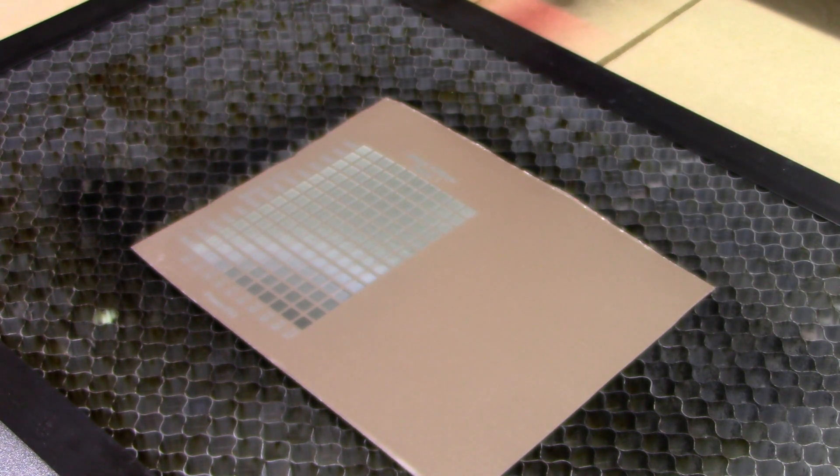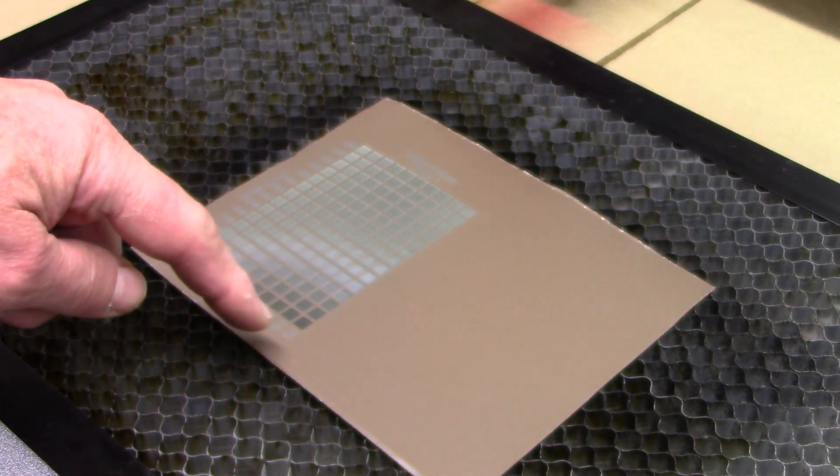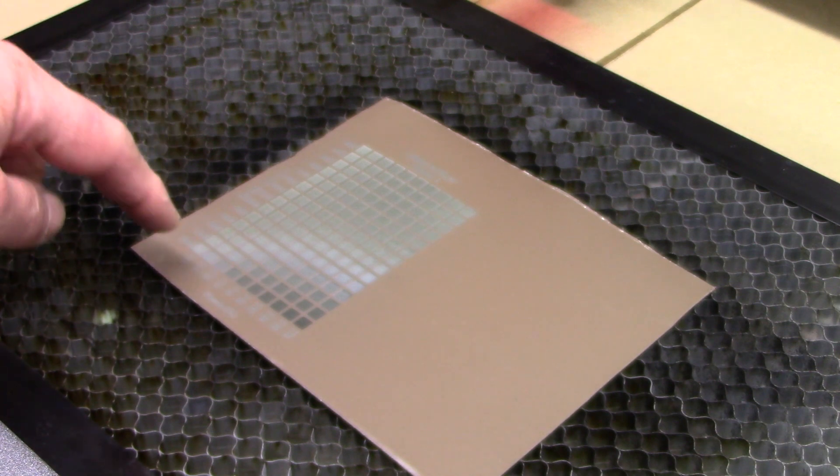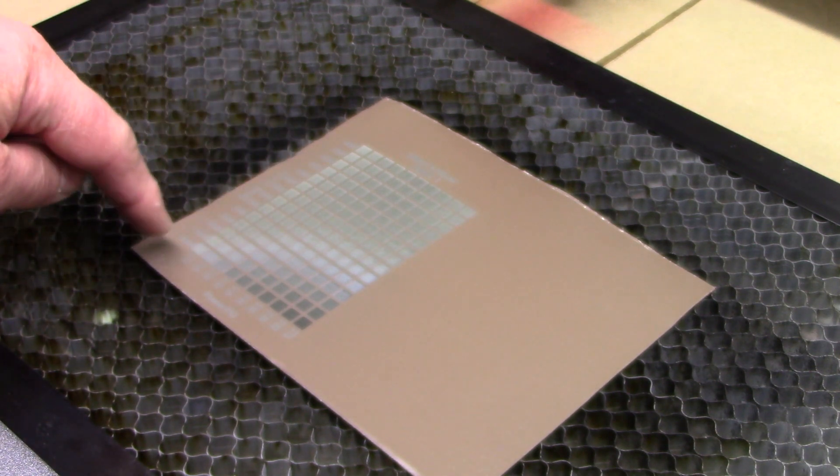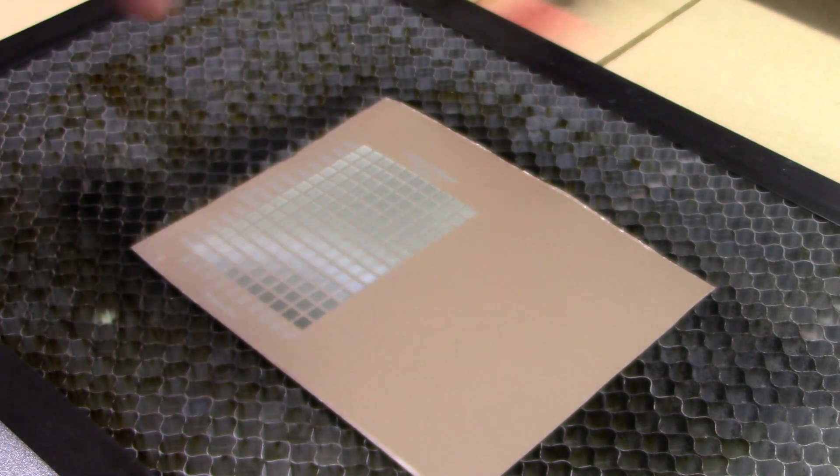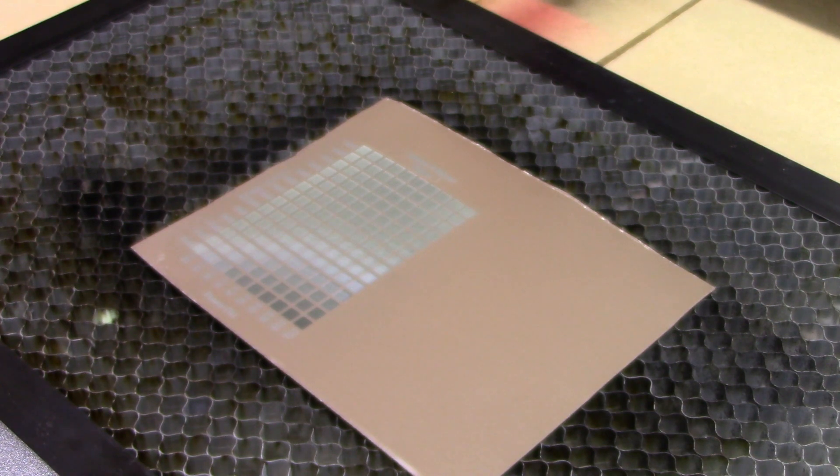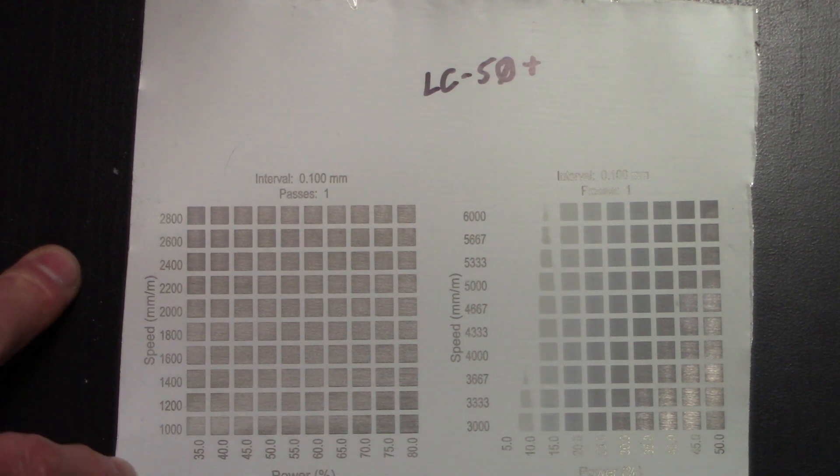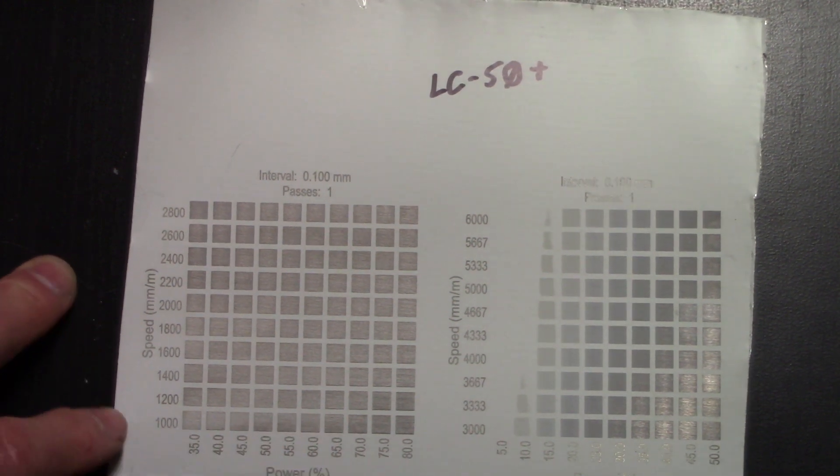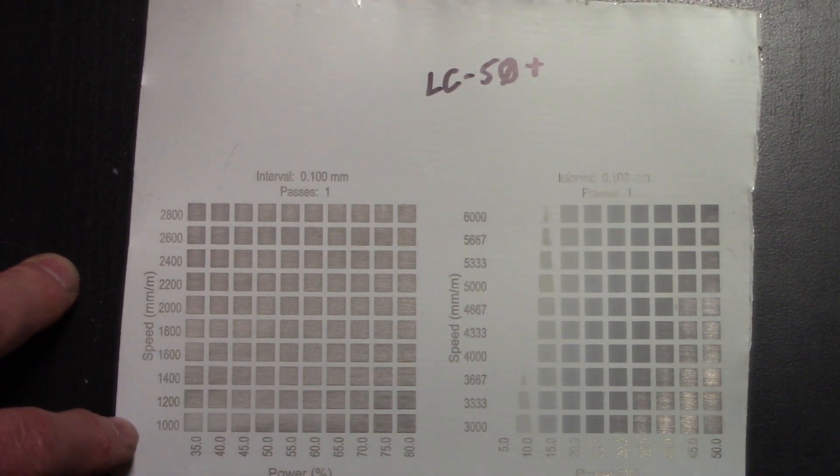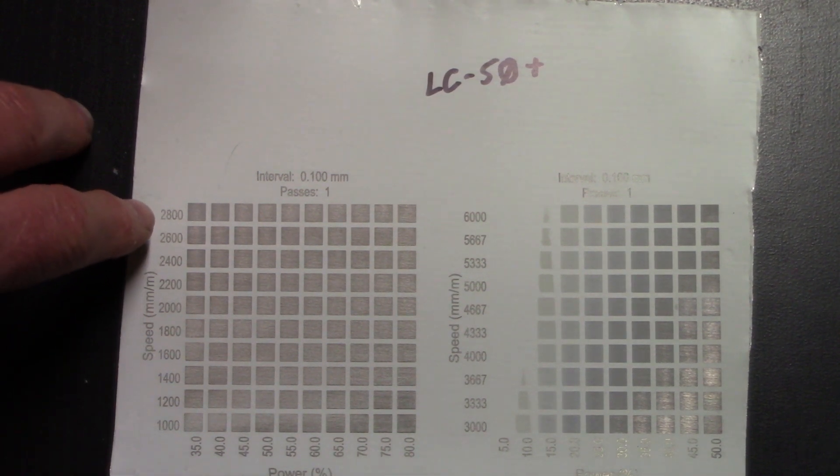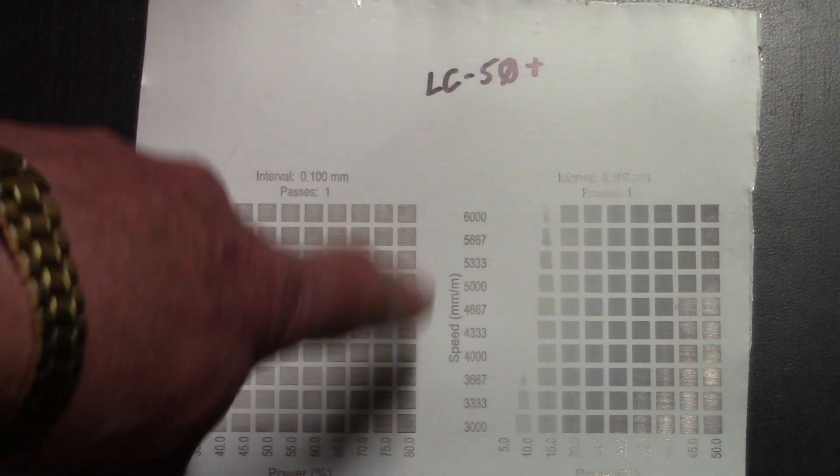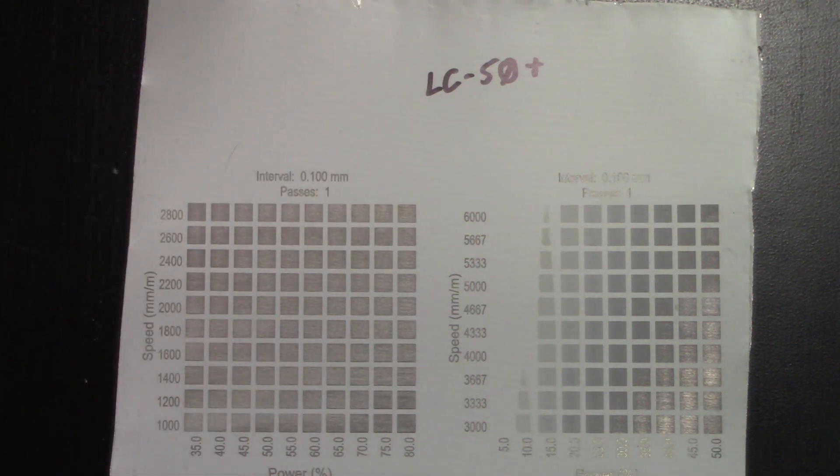That gives us lots of burning parameters that should work well, from dark which will probably clean off. But even these slow powers at high speed is getting right through this. That was a good test in setting up the parameters to burn. This first test where we went 35% up to 80%, 1,000 millimeters per minute up to 2,800 - every single one of the squares burned through the paint, no problem.